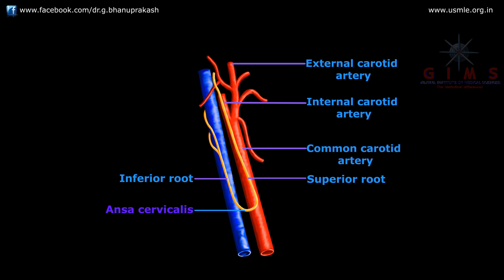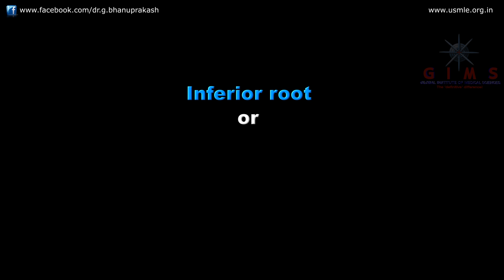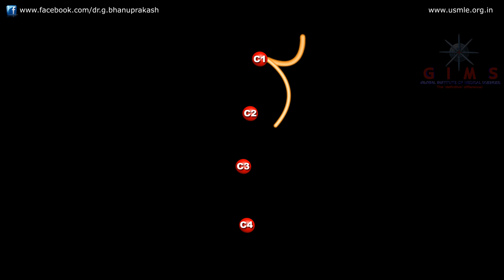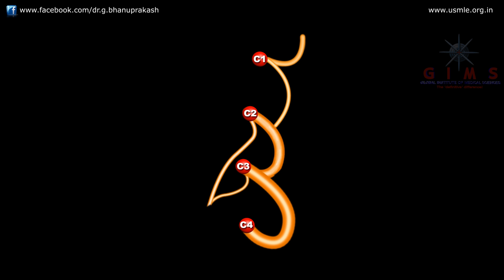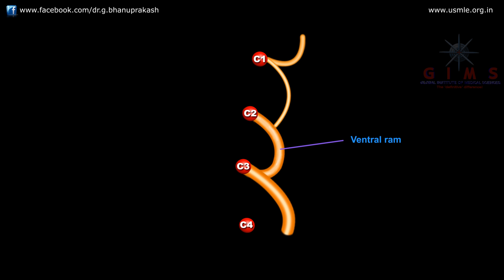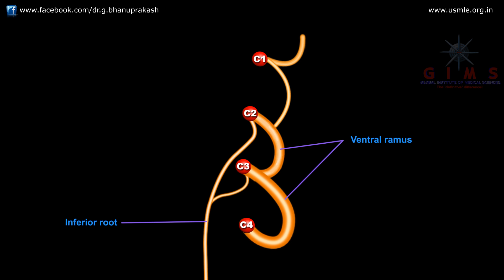Now let us talk about the formation of the inferior root of the ansa cervicalis. The inferior root is also called the descending cervical nerve and is derived from the second and third spinal nerves — that is, the ventral ramus of C2 and C3. The ventral rami of C2 and C3 give off fibers to form the inferior root of the ansa.